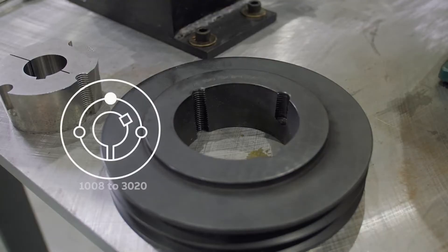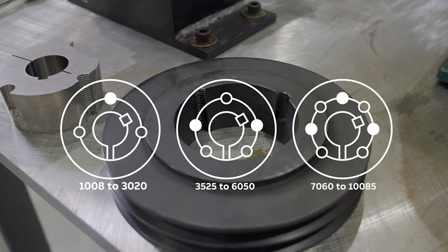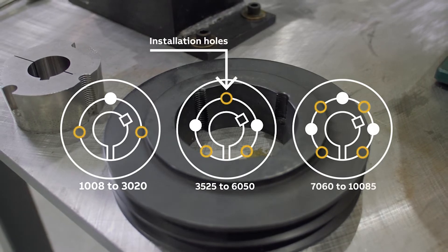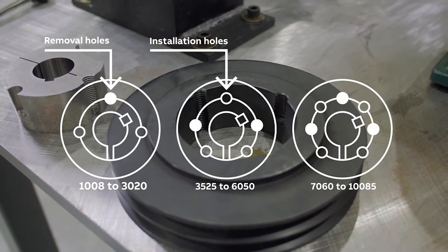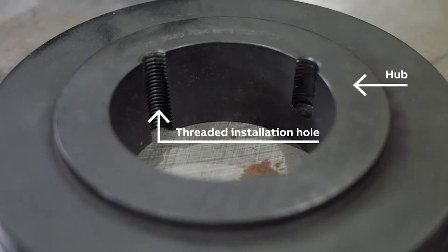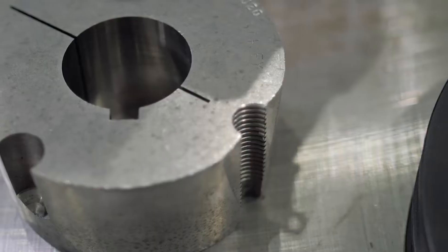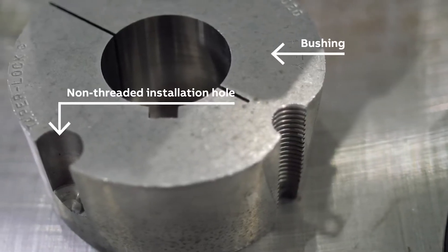Taper lock bushings and hubs have two sets of half holes: one set for installation and one set for removal. The number of holes is determined by the size of the bushing. Installation holes have threaded half holes in the hub with non-threaded half holes in the bushing.